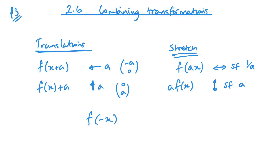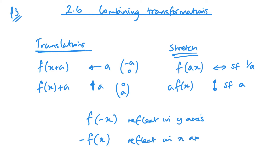There are a couple of special cases of the stretch. f of minus x — this is essentially when a is negative 1 — gives you the same as a reflection in the y-axis, because it takes the positive x values and mirrors them. Similarly, taking the negative outside — when the stretch is minus 1 — results in a reflection in the x-axis. These are special cases; you can work them out as you go, but it might make your life easier if you learn them.